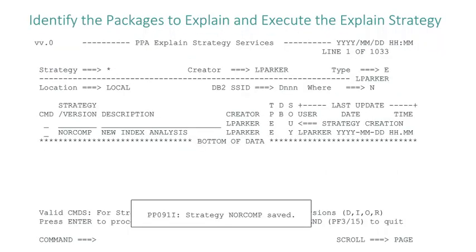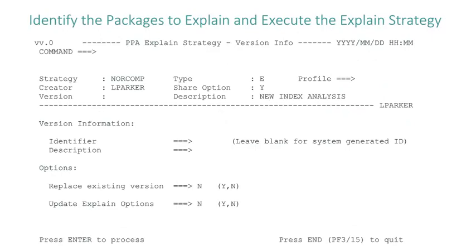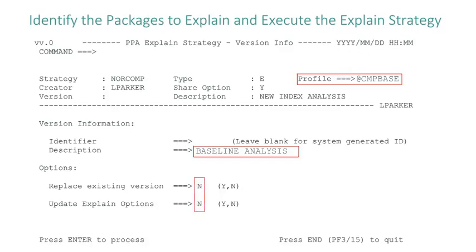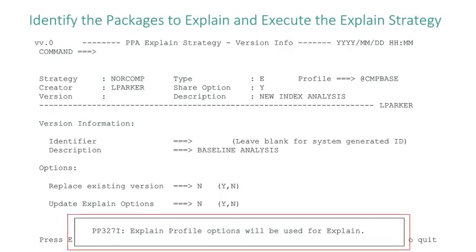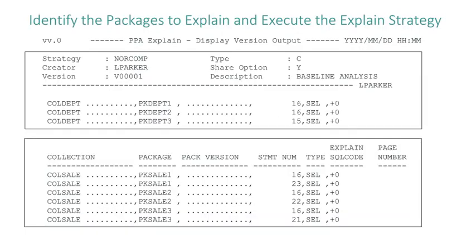Now Lynn is ready to execute her explain strategy. She types an E for execute next to the NORCOMP strategy and presses enter. She types @CMPBASE in the profile field, leaves the identifier field blank, and types 'baseline analysis' in the description field. She verifies that N is specified for each of the options fields and presses enter. A message displays confirming that the explain profile options in @COMPARE BASE will be used for the explain. Lynn presses enter two more times to process her explain online. The explain executes, and Lynn scrolls down and confirms that the SQL code returned for each package is plus zero. Lynn presses F3 and returns to the explain strategy services panel.